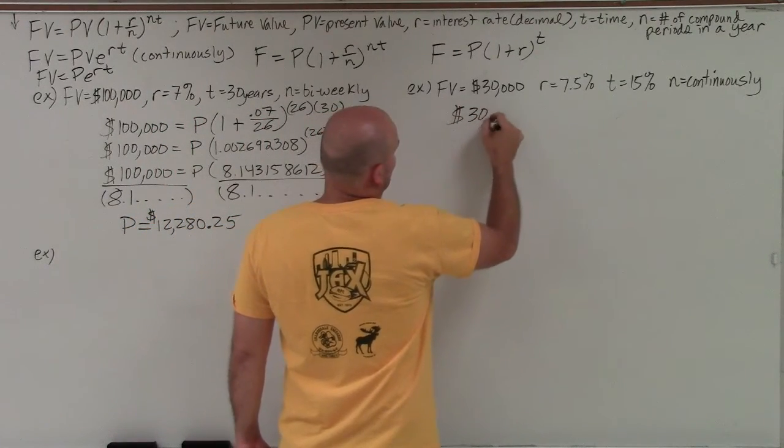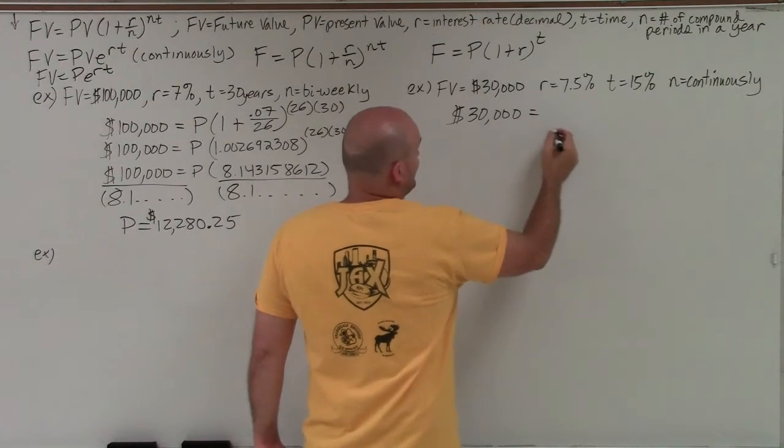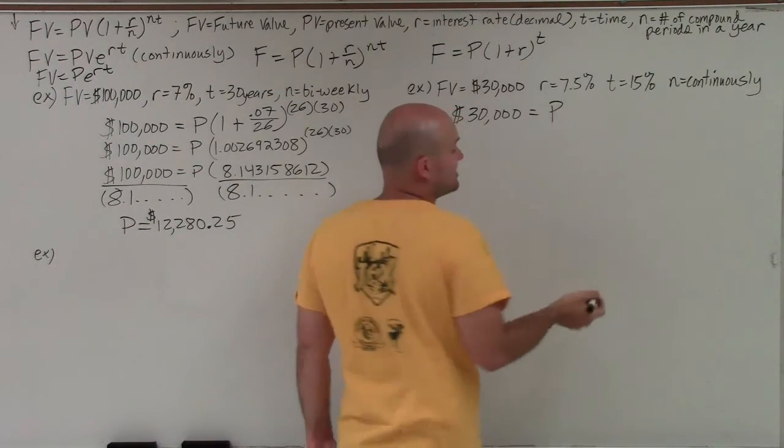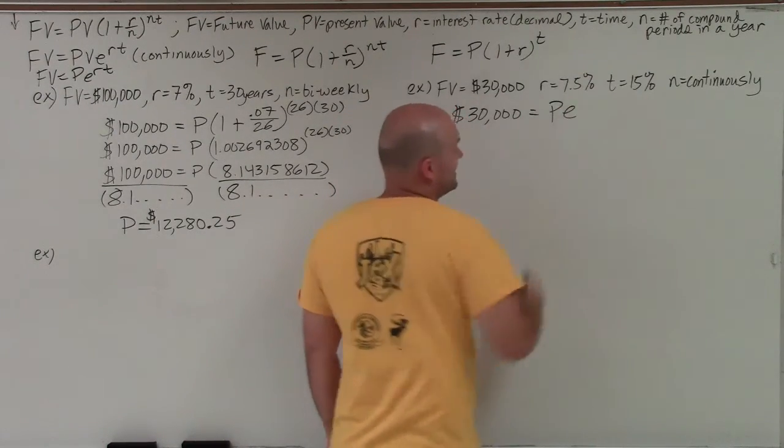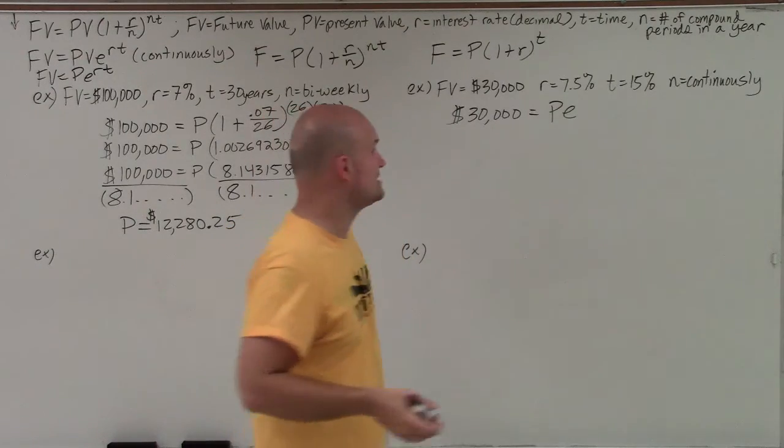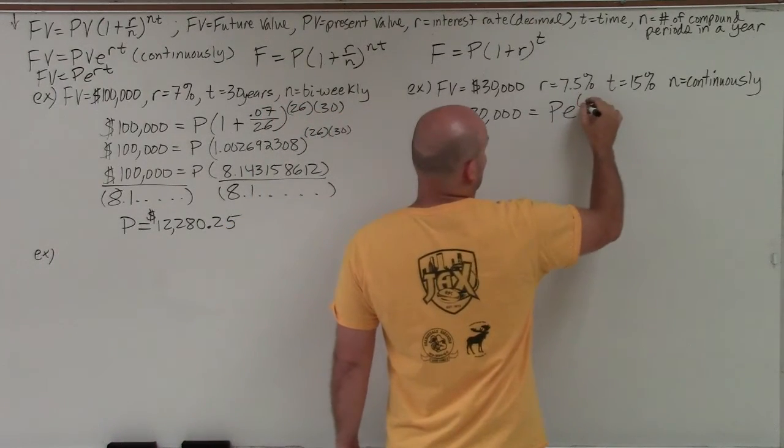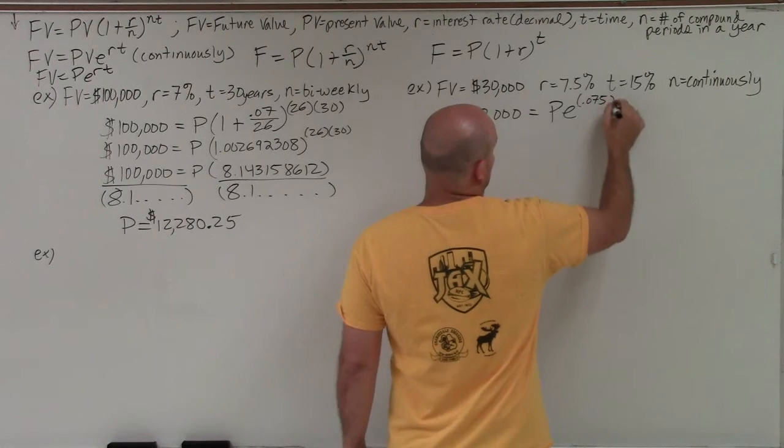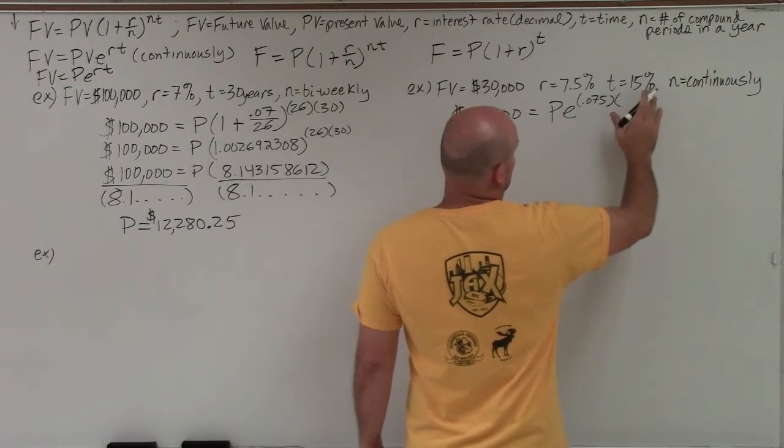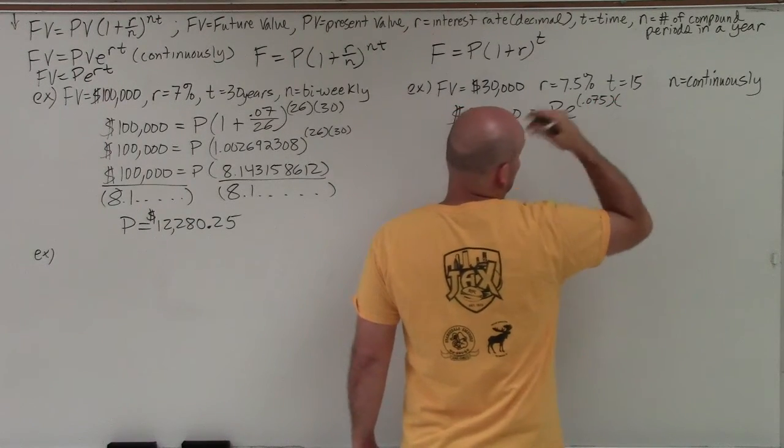All right, so let's go ahead and plug everything in. So we have 30,000 equals P, which is my present value, which I don't know. e is a irrational number. It's a constant raised to the r, again, in decimal form, times, that's not percent, that's 15 years, times 15.